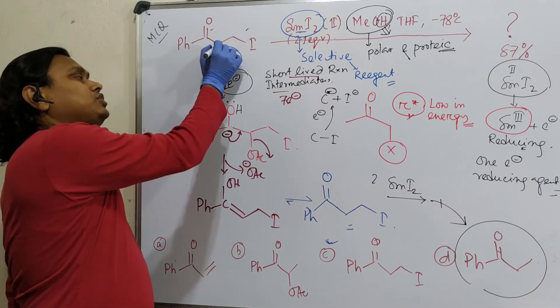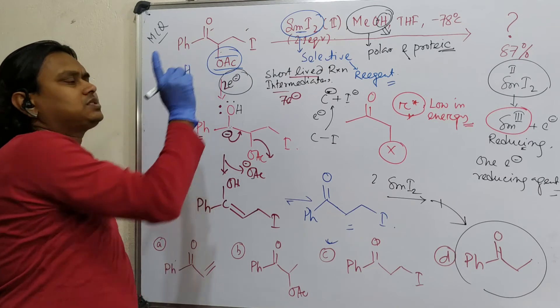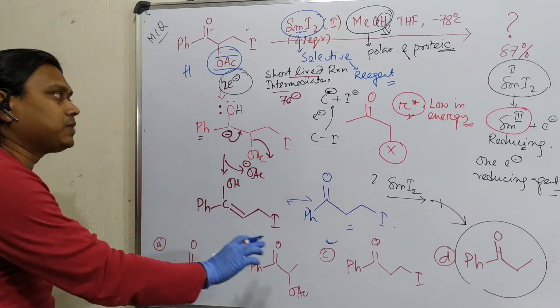if alpha position of carbonyl is substituted with some leaving group, then this alpha substitution occurs, and this reduced via enol. This is the chemistry you should know. I have explained the mechanism.